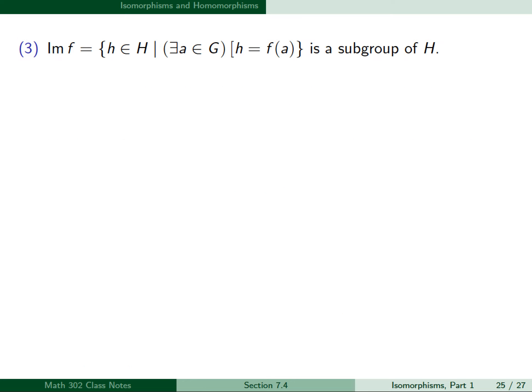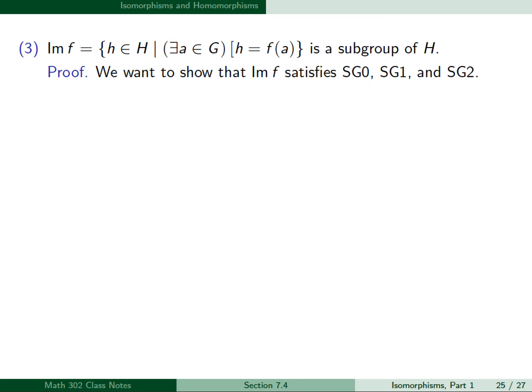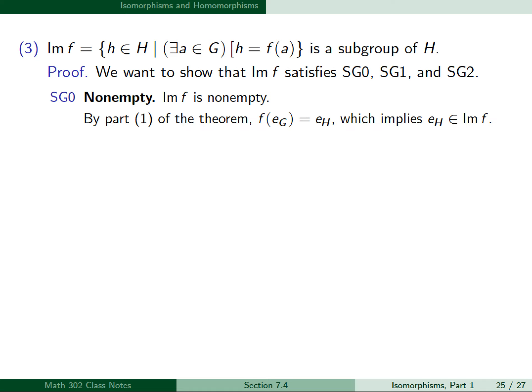For part 3, we show the image of f is a subgroup of H by verifying conditions Sg0, Sg1, and Sg2. For Sg0 (non-empty): by part 1, f(e_G) = e_H, so e_H belongs to the image of f. Therefore the image of f is non-empty, satisfying Sg0.